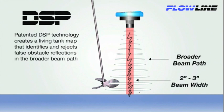This allows Flowline ultrasonic sensors to measure reliably in tight places or applications with obstructions.